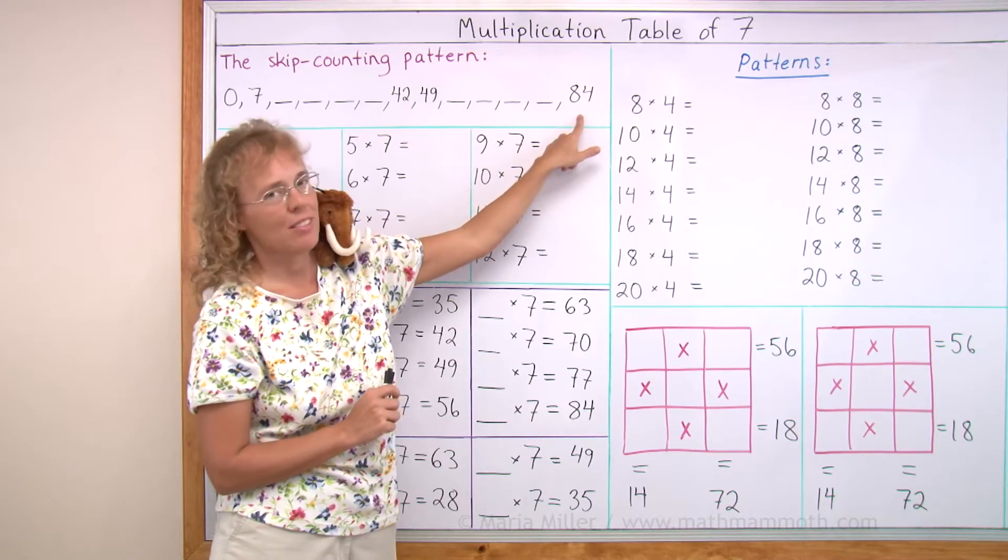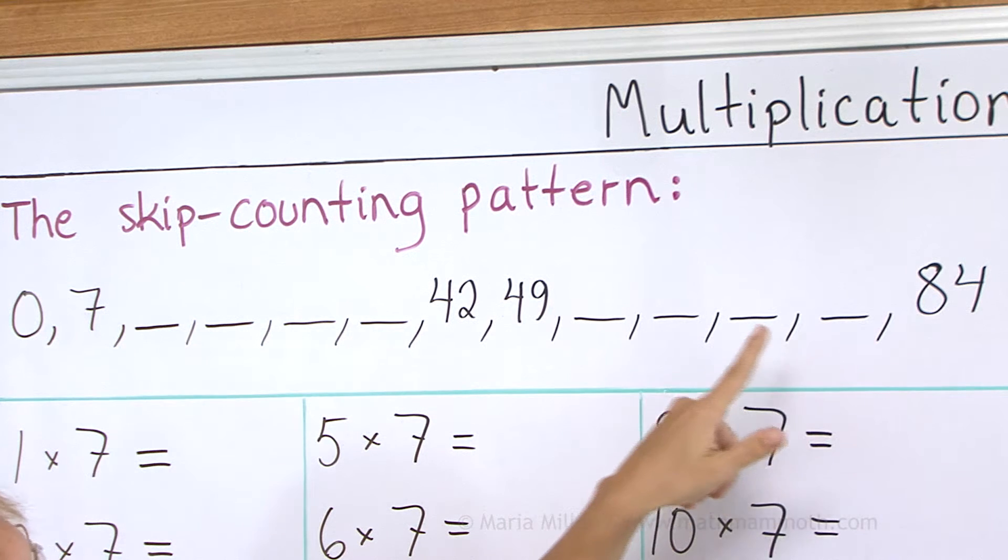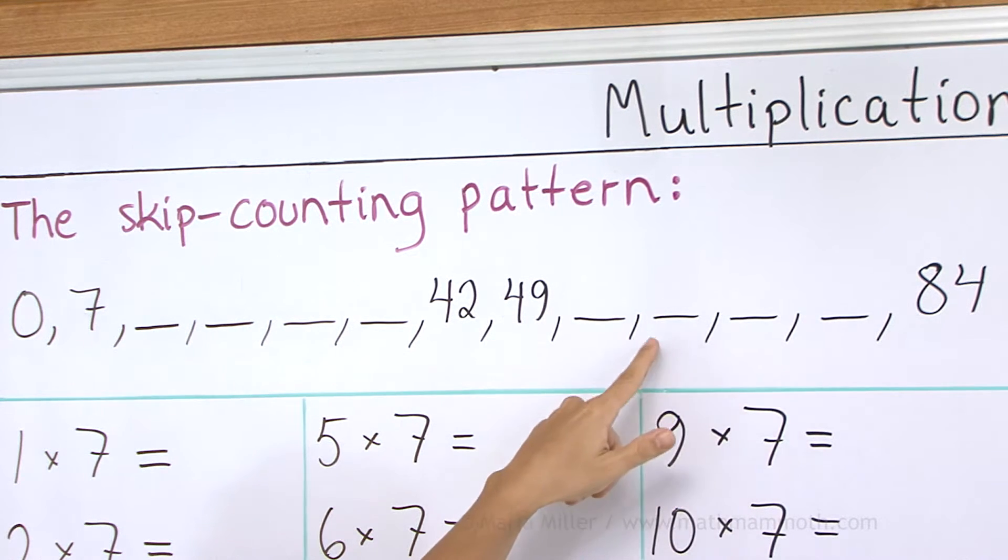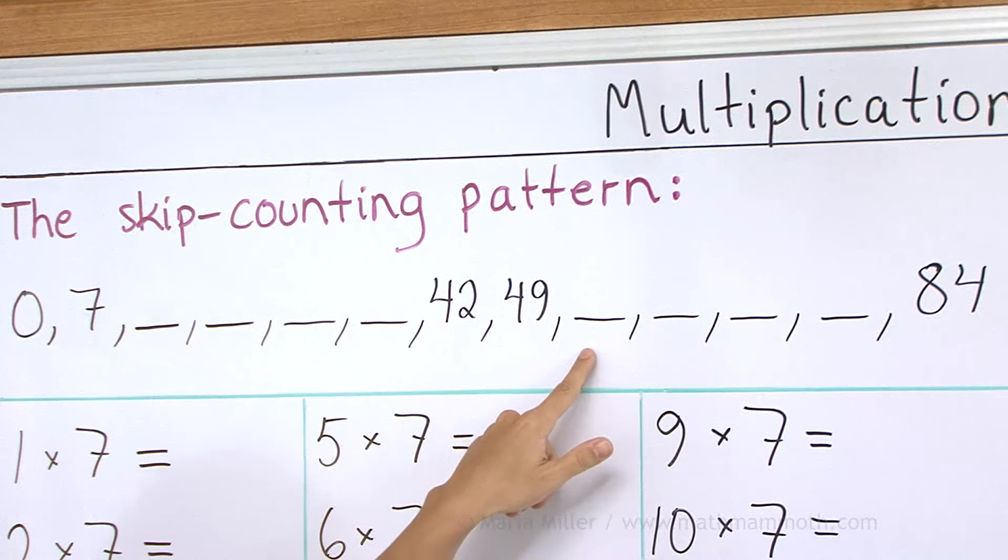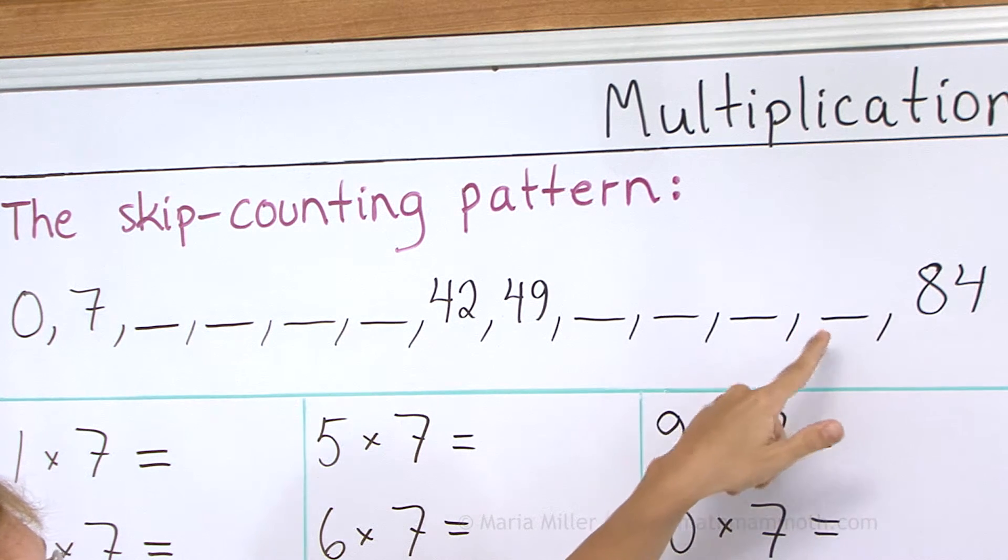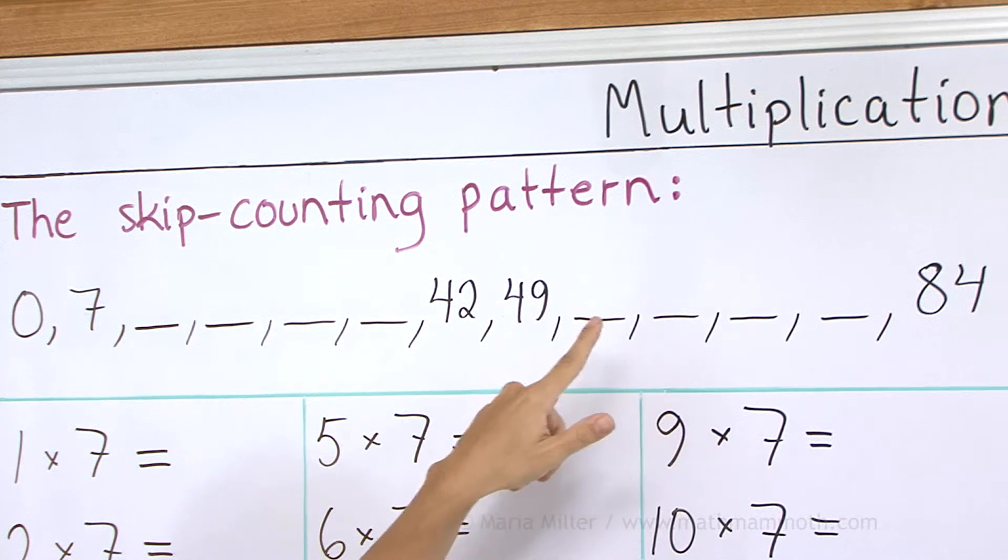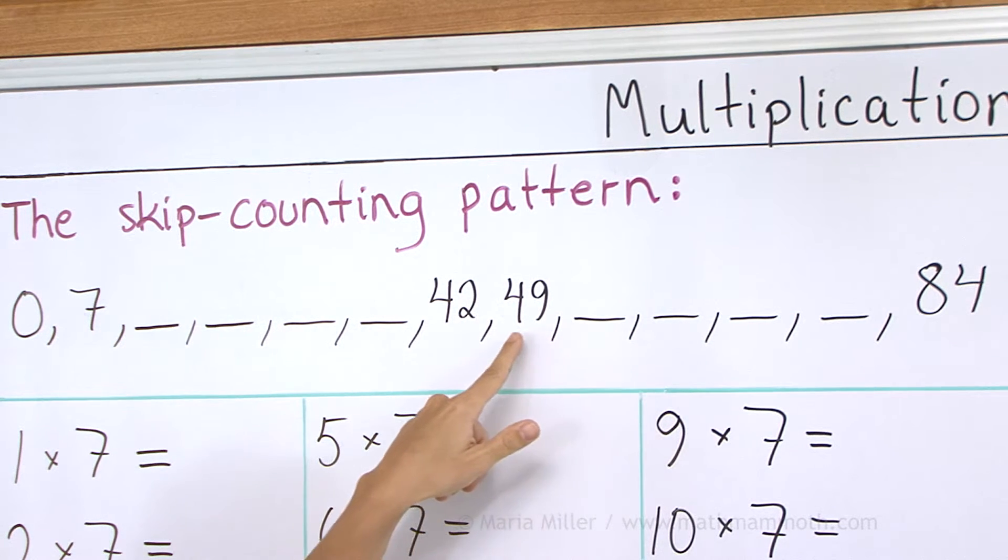And 84 and then backwards, 84, 77, 70, 63, 56, 49. Your turn.